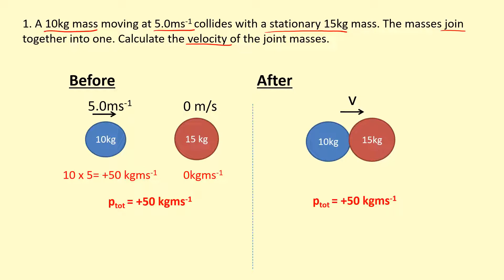The masses are joined together, so I need to come up with an expression for the momentum of the joint masses. The mass now is 25 because they're stuck together, and they're moving at some unknown velocity V. So its momentum is 25V. We know that 25V must equal 50. Solving this equation, you get V equals 2 meters per second going towards the right.